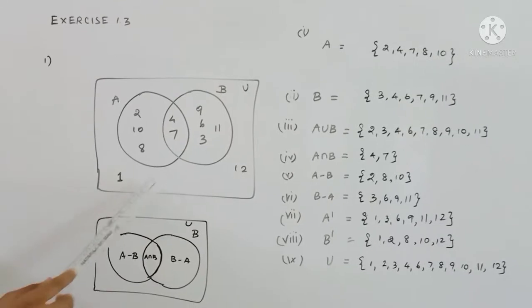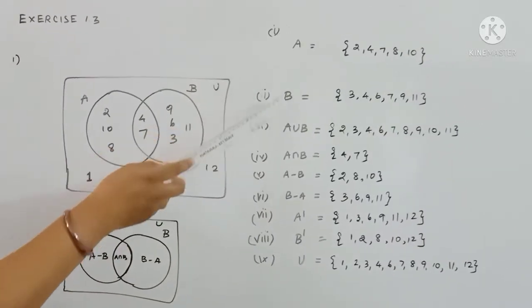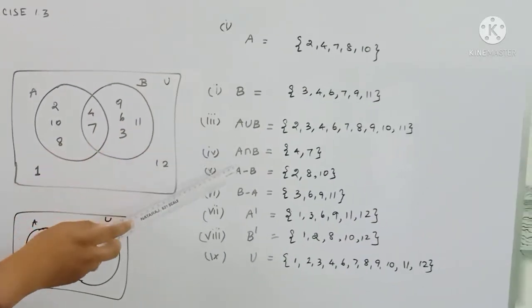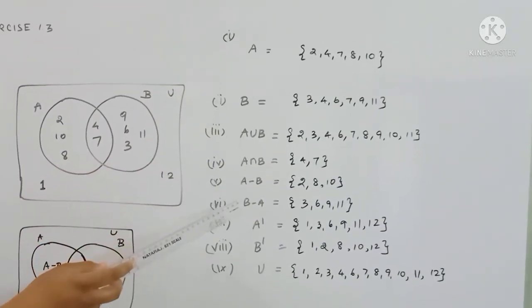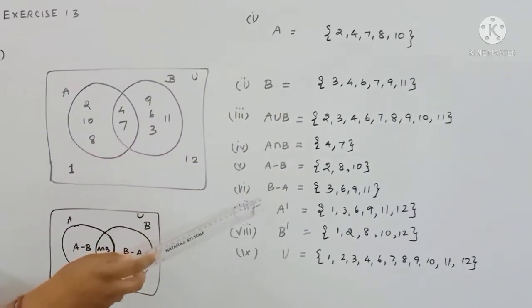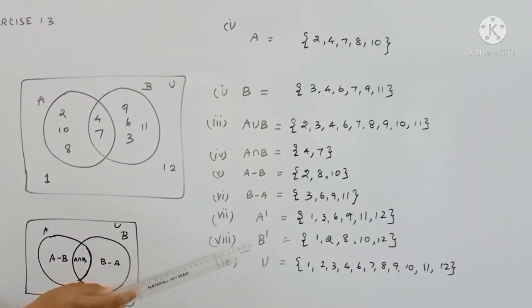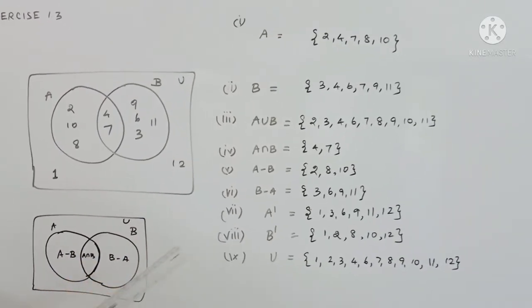When we use the Venn diagram, we can use values: A, B, A union B, A intersection B, A minus B, B minus A, A dash, B dash, and the universal set.